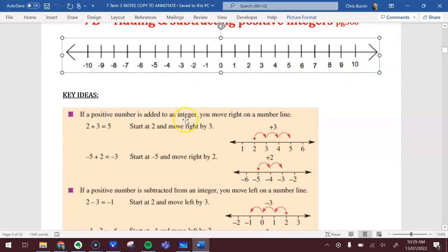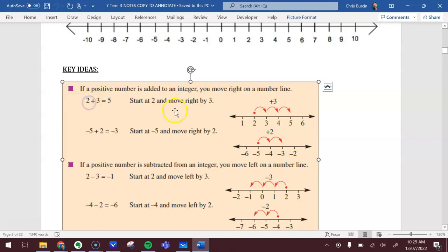If a positive number, like 2, is added to an integer, you move right on the number line. So start at 2, then you move 1, 2, 3, because you're adding 3.